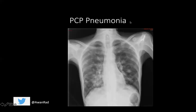Finally, PCP pneumonia, which is often seen in HIV patients — patients with AIDS or CD4 counts less than 200 — you typically get widespread diffuse multifocal opacity. Notice here we have widespread opacities involving nearly every lobe of the lung in this case of PCP pneumonia. It's also described as ground-glass opacities. This is what a typical chest X-ray would look like for someone with PCP pneumonia.